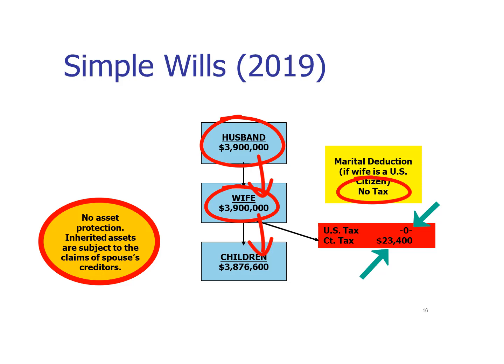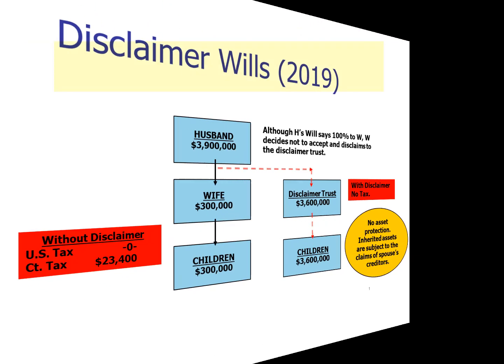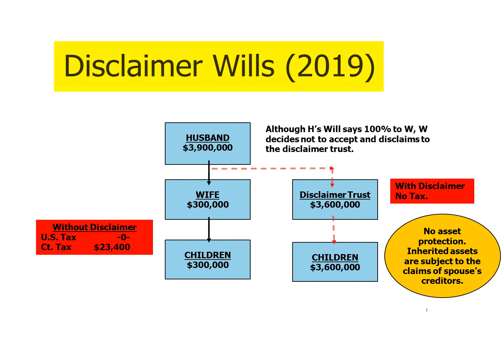If the surviving spouse needs to go into a nursing home, the trust could be drafted so that the assets of the trust would not be counted as available to the surviving spouse for purposes of qualification for Medicaid or Title 19 benefits.